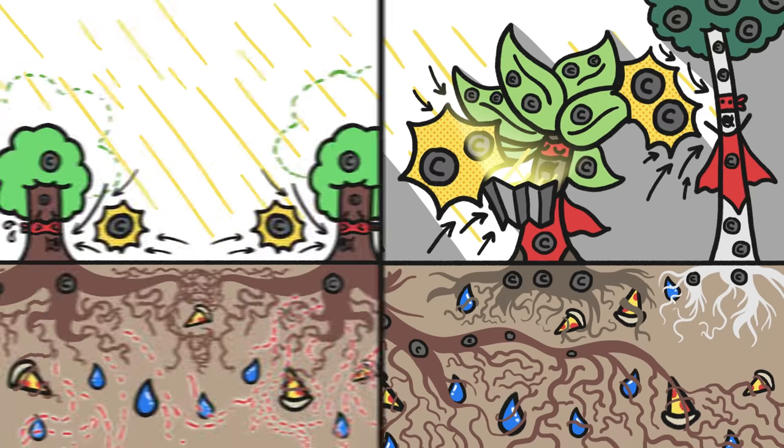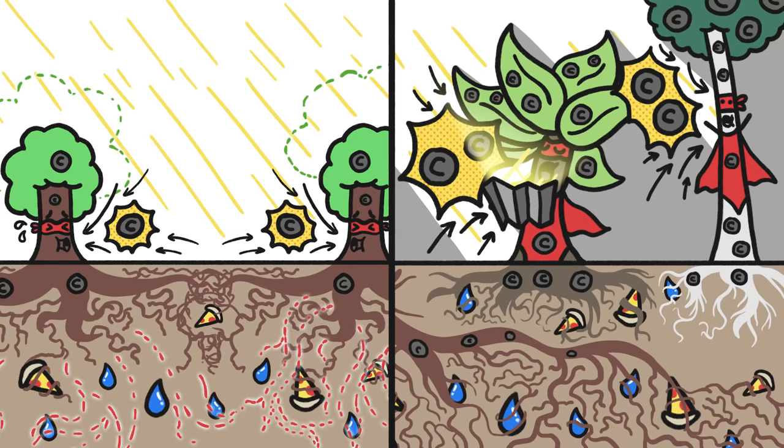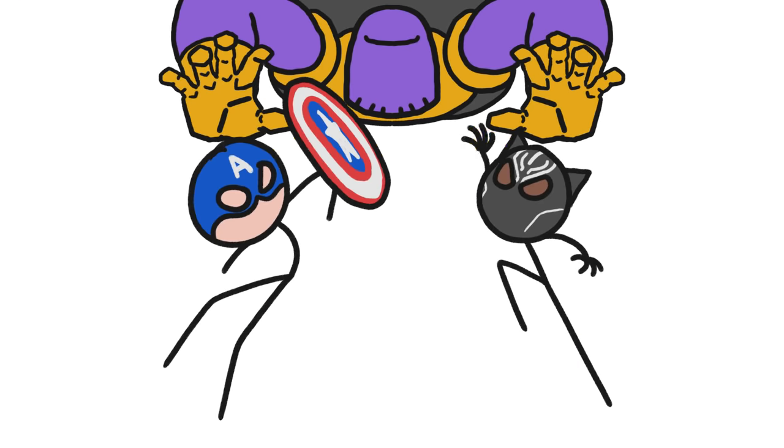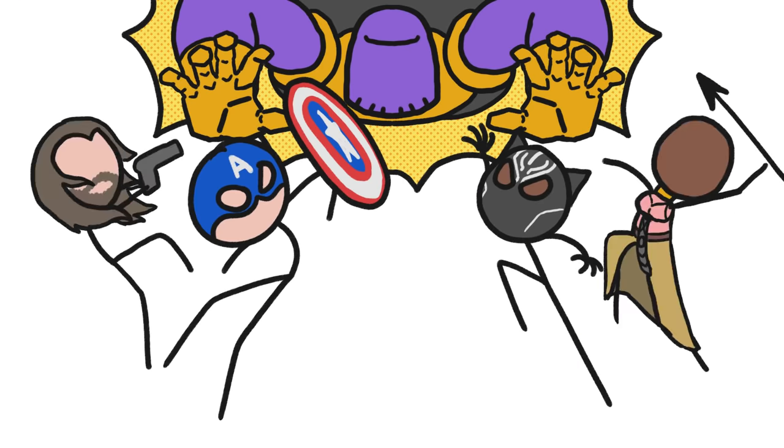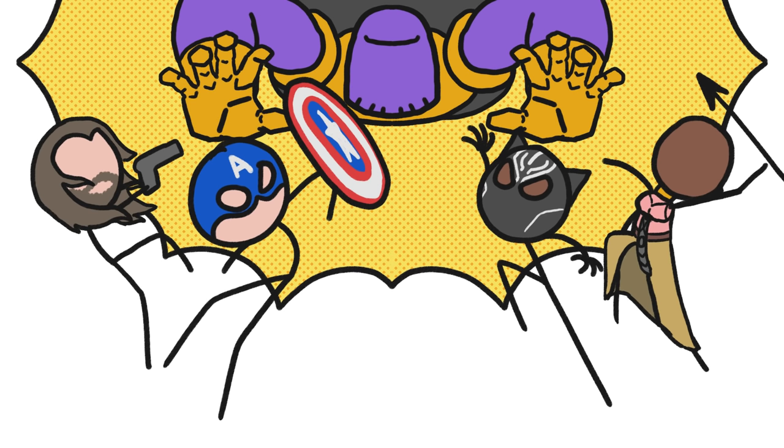A diverse forest can sequester twice as much carbon, or more, as a single species stand. But the very best squads have sidekicks too. Okoye and Bucky Barnes may not be the stars of the show, but they play key roles in defeating supervillains.